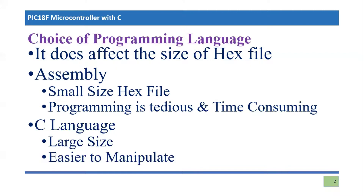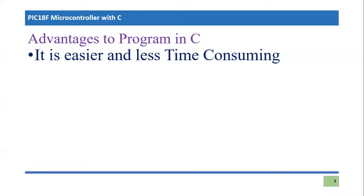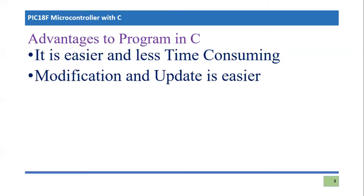Let's contrast the two languages — assembly and C — and look at the advantages of programming in C. First, it is easier to implement and less time-consuming, saving comfort for the programmer and reducing development time. Furthermore, modification and updating the code is much easier in C, which was very difficult in assembly. In assembly, for a single change you may need to write several lines of code, but in C programming modification is quite straightforward.